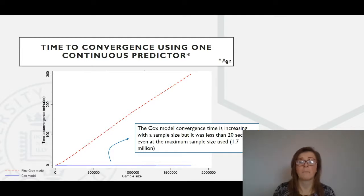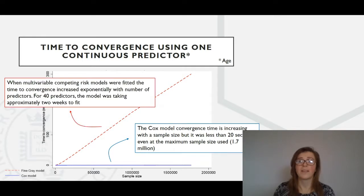So when introducing more predictor variables to the model, the time to convergence for the competing risk model increased exponentially with the number of predictors up to a convergence time of two weeks, with all 40 predictors of interest being included.